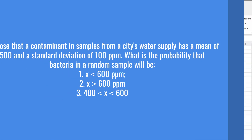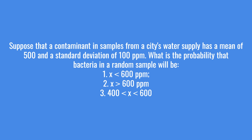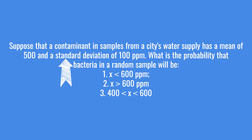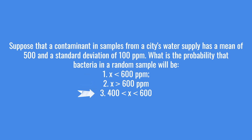I have got a question here concerning bacteria counts in a city's water supply. In general with these types of normal distribution word problems you will be given a mean, a standard deviation, and the questions will ask you either the less than probability, the more than, or the between. I am going to show you how to do all three in Excel.